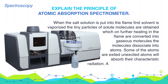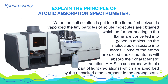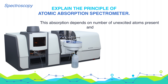AAS, or Atomic Absorption Spectrometer, is concerned with the part of light which is absorbed by the unexcited atoms present in the ground state. This absorption depends on the number of unexcited atoms present, and hence it is independent of the flame temperature.